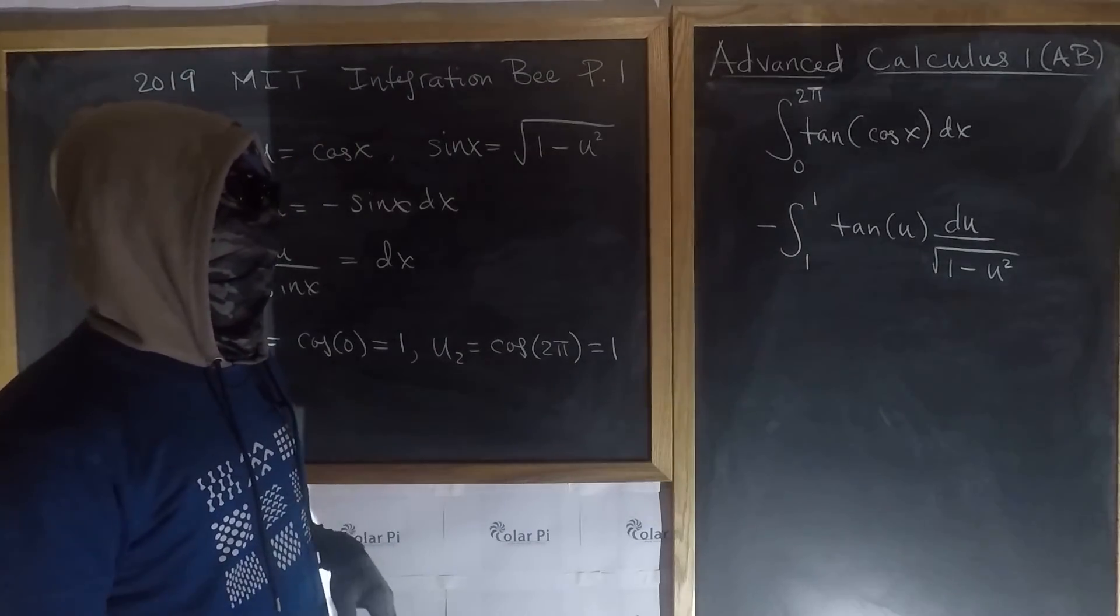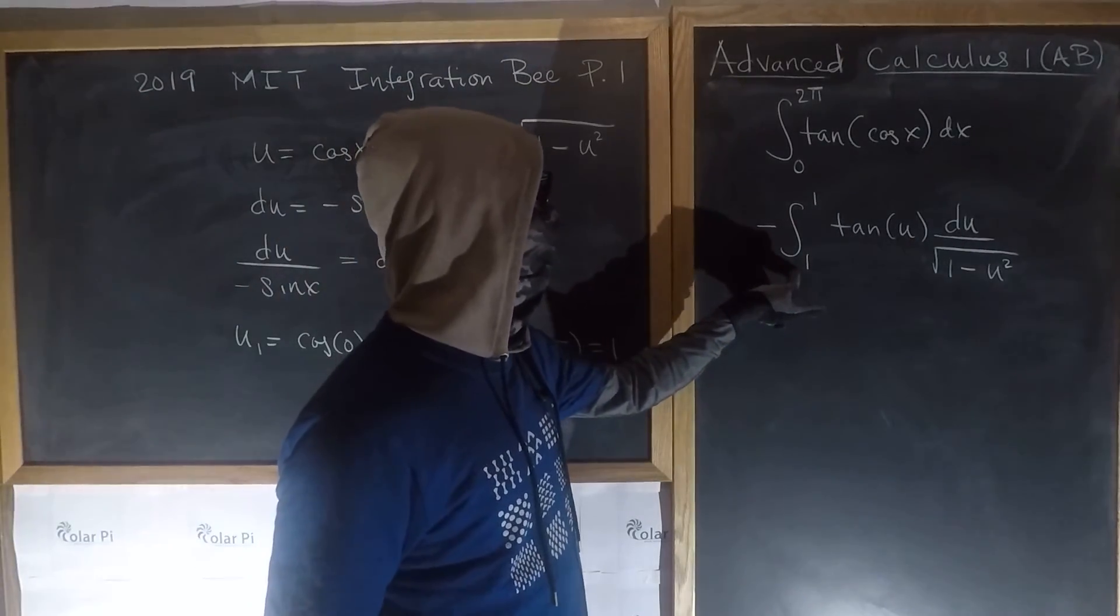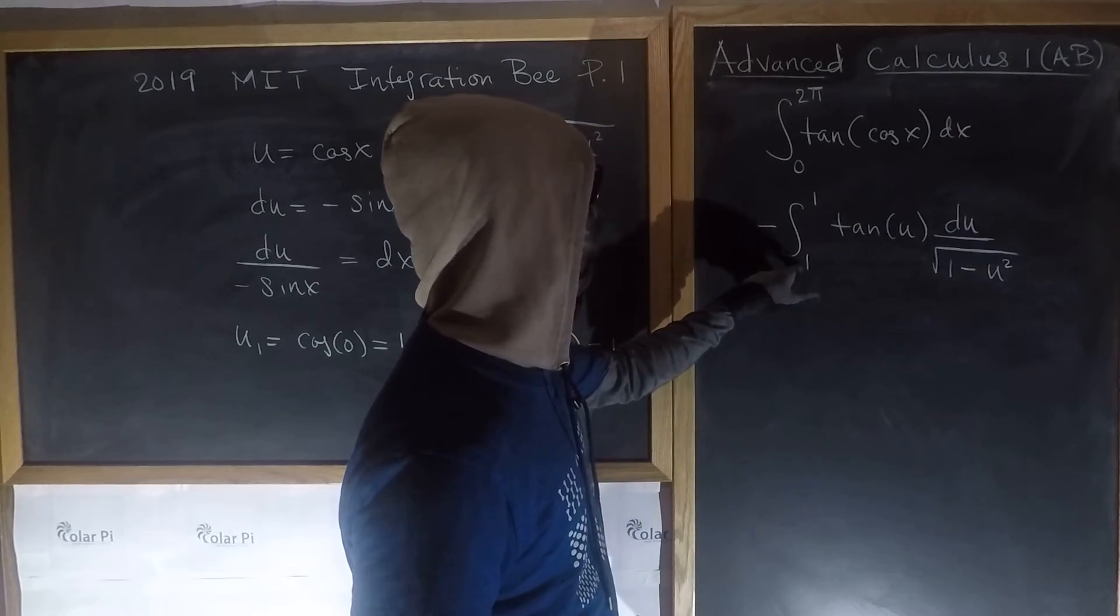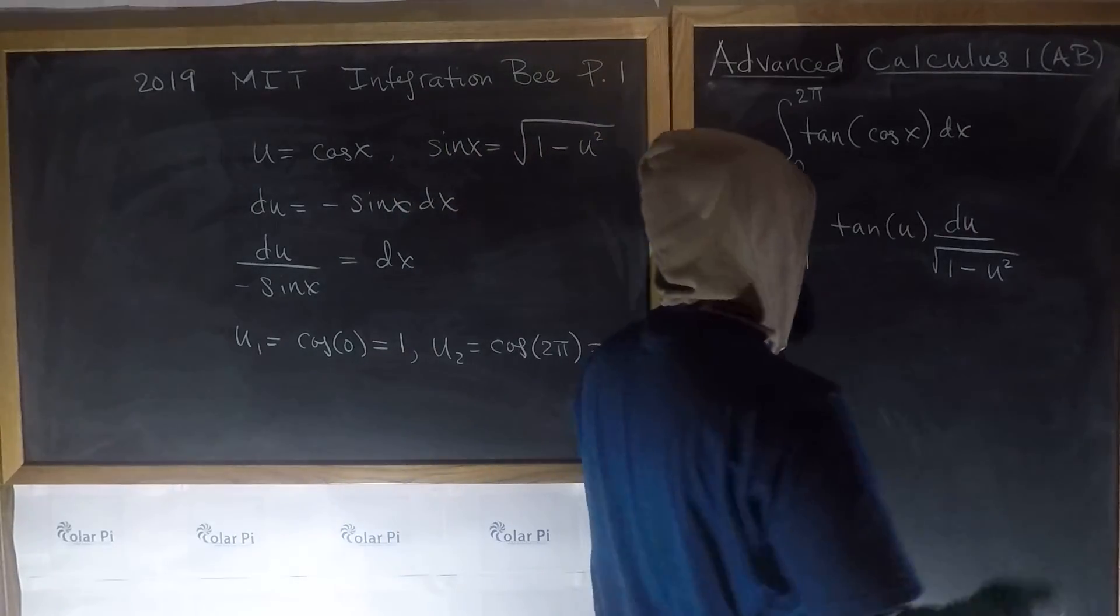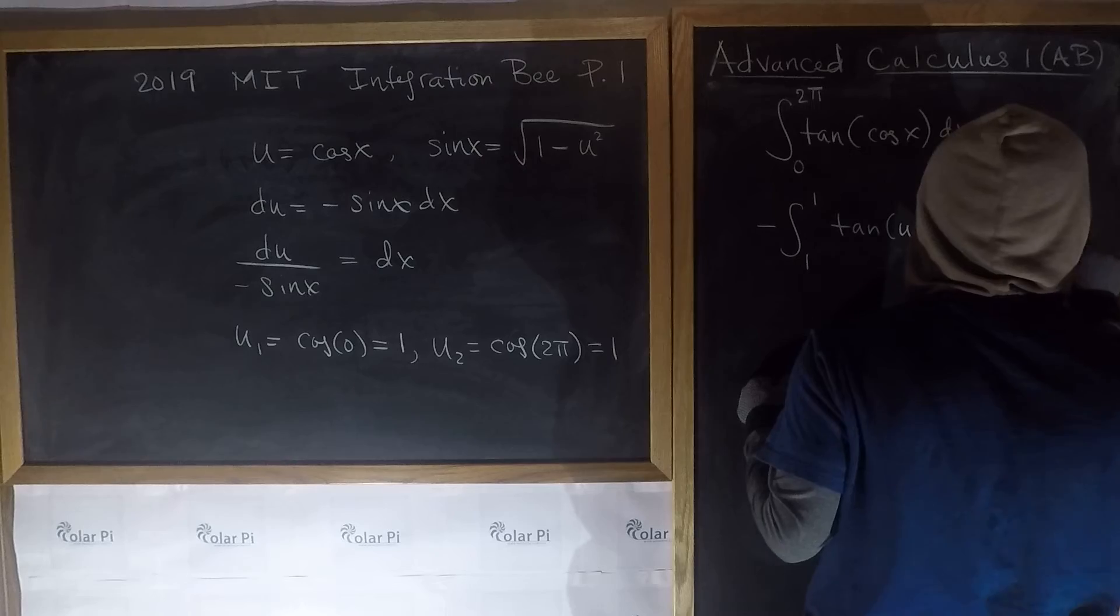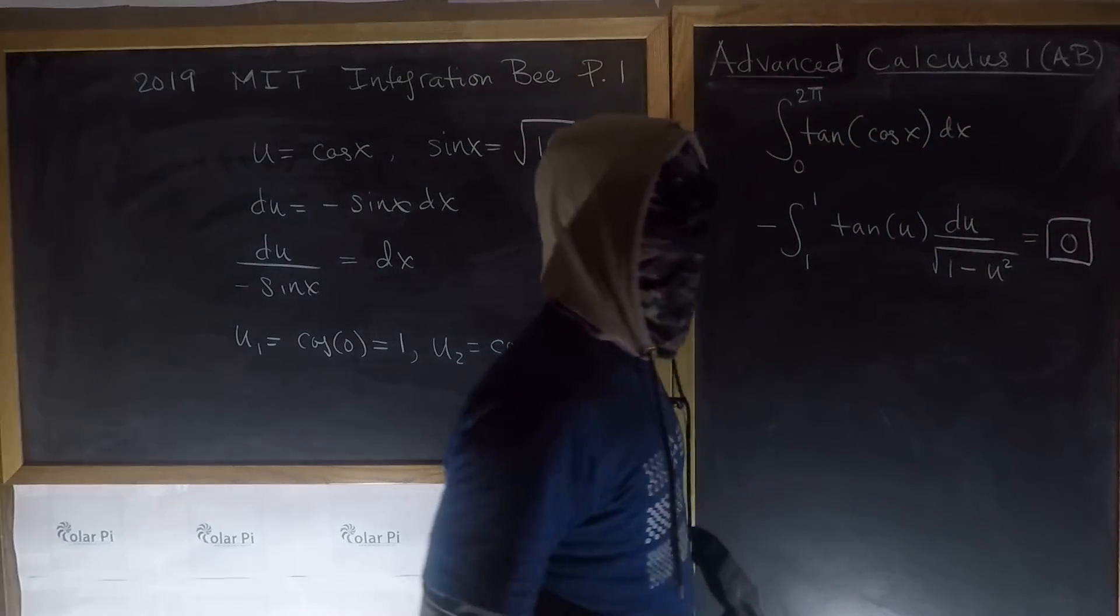But I'm doing too much already, because I see that this is going from 1 to 1. And we know that the integral from a to a of whatever is 0. So we see that this is equal to 0, and we are done.